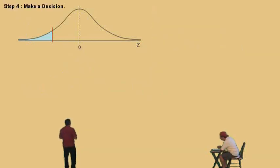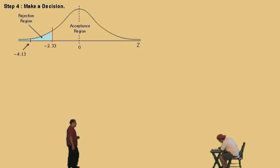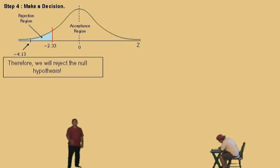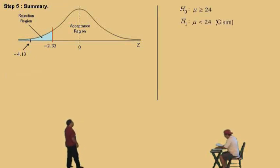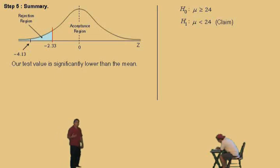Let's go to step four: make our decision. Our test value of negative 4.13 falls in the rejection region in the tail, beyond the critical value of negative 2.33. Therefore, we reject the null hypothesis. Our sample mean was 18.2, which translates to Z equals negative 4.13 — significantly lower from the mean — so we do have a significant result. There is significant evidence to reject the null hypothesis and support the claim.